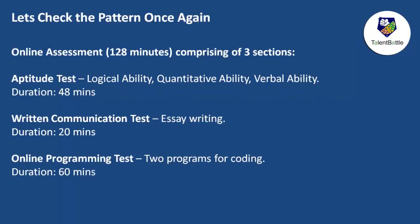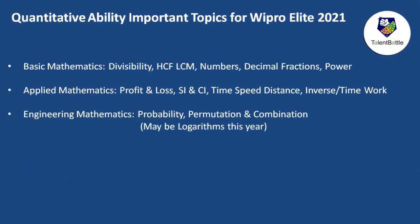The online assessment is 128 minutes comprising three sections. The first section is the aptitude test — logical ability, quantitative ability, and verbal ability — with a duration of 48 minutes. There is also a written communication test, which is essay writing, lasting 20 minutes. Finally, there is an online programming coding test with two programs to solve in 60 minutes.